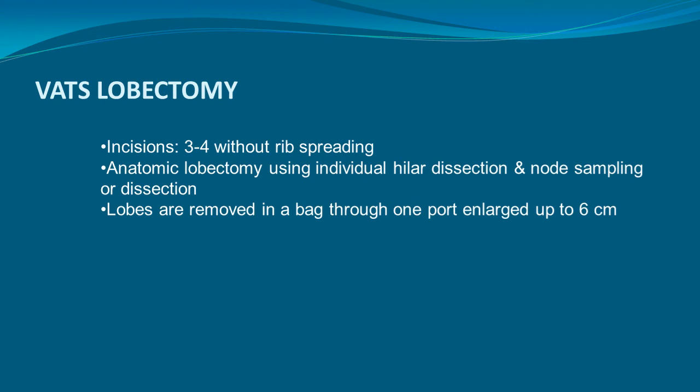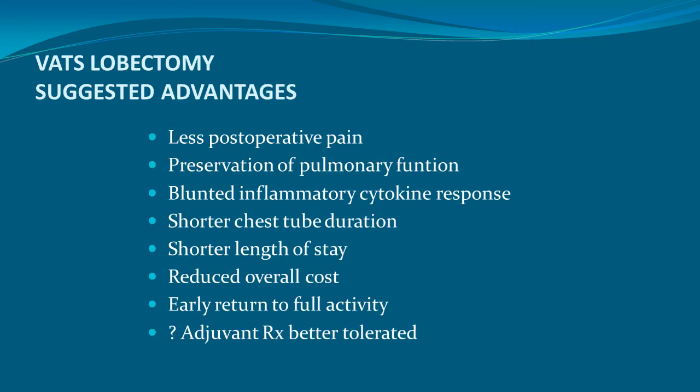When performing VATS lobectomy, we usually make 3 to 4 incisions and do not spread the rib. Anatomic lobectomy using individual hilar dissection and node sampling is performed. Lobes are removed in a bag through one port, which is enlarged up to 6 cm.